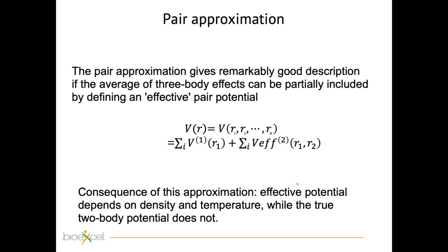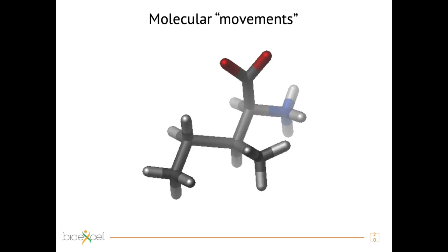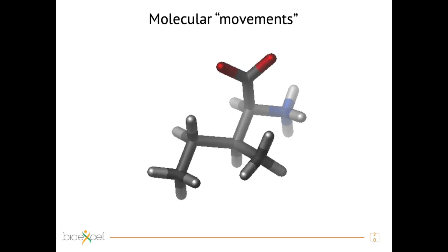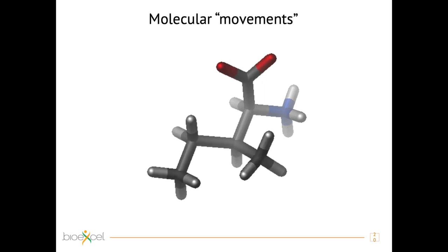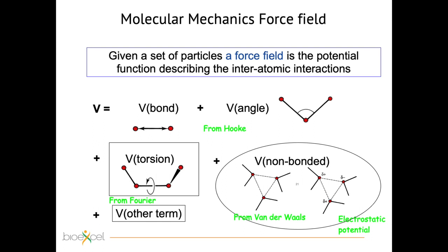The potential is divided into different types of interactions. Looking at the movements in a molecule, we have bond vibrations, angle vibrations, and torsional rotations — these are bonded terms. Plus we have non-bonded interactions that prevent molecules from penetrating each other and account for how molecules interact — whether they attract or repel each other. Classically, the potential is divided into bonded terms (bond, angle, torsion) and non-bonded terms including Lennard-Jones interactions and electrostatic interactions.